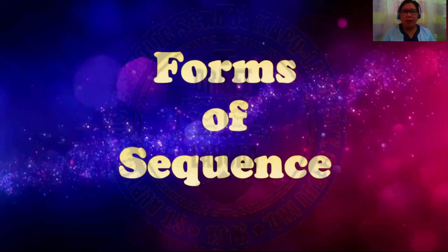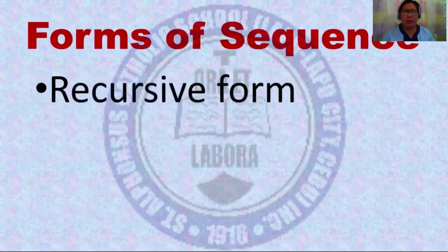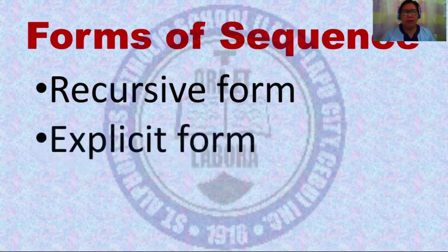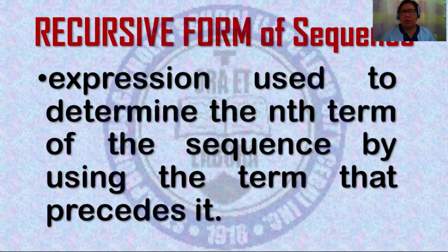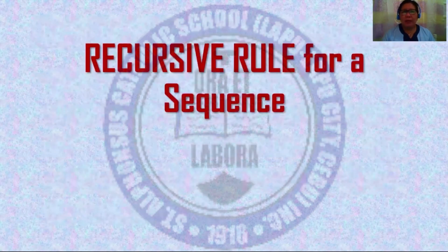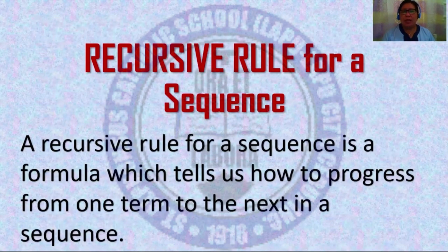There are two forms of a sequence — the first one is recursive form, and the other one is explicit form. I am going to discuss only the recursive form of a sequence. What is a recursive form? It is an expression used to determine the nth term of a sequence by using the term that precedes it. We also have a recursive rule for a sequence — a formula which tells us how to progress from one term to the next in a sequence.